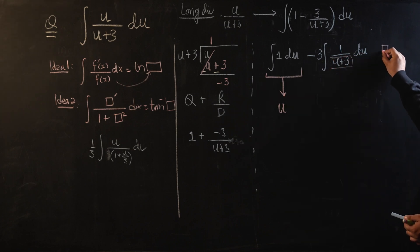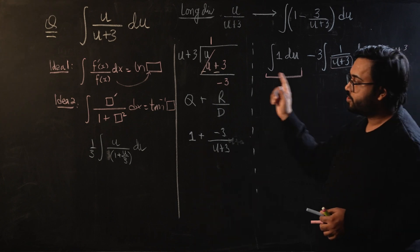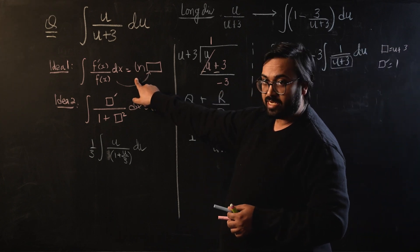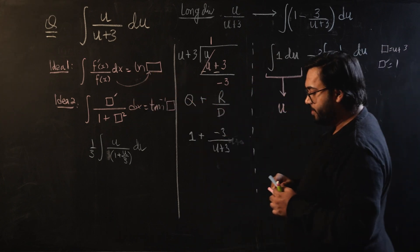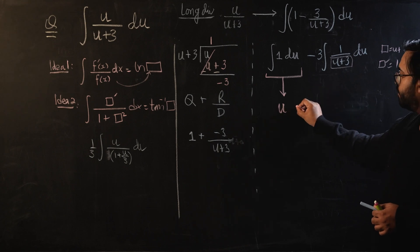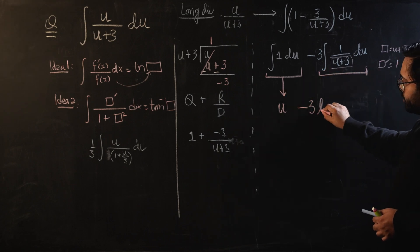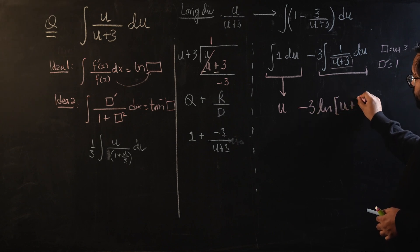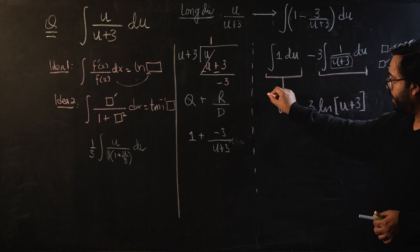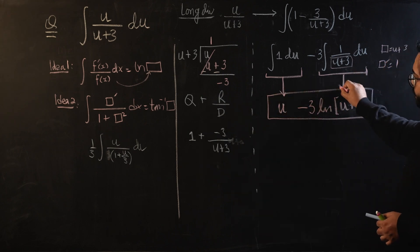For this term, you can easily see that the integral of 1 with respect to u will become u. And over here we can understand that the box is u+3. If the box is u+3, the differentiation is 1 which is present in the numerator, and we can use this integral property to convert into a logarithm. So this will become -3 times, this whole thing will become natural log of u+3. And this is the final answer for this integral.